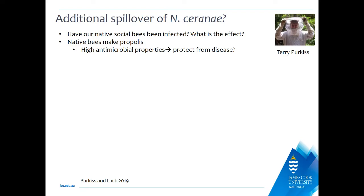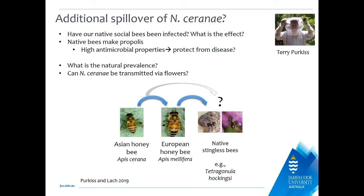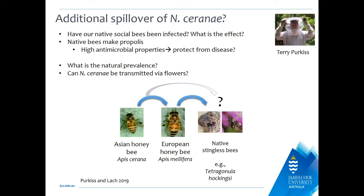Nosema ceranae is a gut parasite, so it affects the energetics of the bee, and because it affects energetics, it affects foraging. Given that we rely on bees so much for pollination services, I'm really interested in figuring out how much diseases affect foraging. The question we had was whether there would be spillover of Nosema ceranae to one of our native stingless bees — Tetragonula hockingsi — and what the effect of that would be.